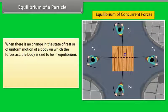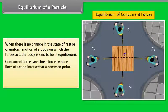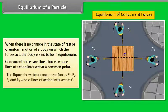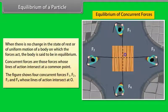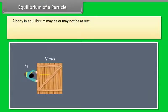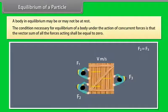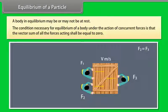Equilibrium of a Particle: When there is no change in the state of rest or uniform motion of a body on which forces act, the body is said to be in equilibrium. Concurrent forces are those whose lines of action intersect at a common point. For example, four concurrent forces F1, F2, F3, and F4 whose lines of action intersect at point O. The condition for equilibrium is that the vector sum of all concurrent forces shall equal zero.